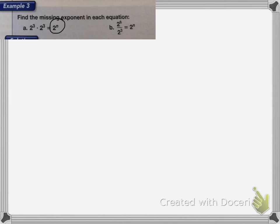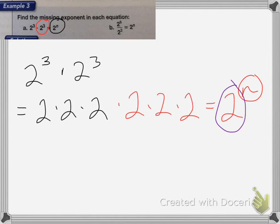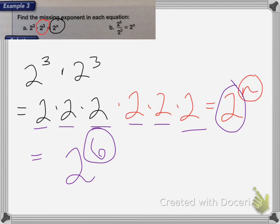This one wants me to find the missing exponent in each equation. For A, we have 2 to the 3rd power times 2 to the 3rd power. 2 to the 3rd power is 2 times 2 times 2, and I'm multiplying that by another 2 times 2 times 2. The exponent tells me how many times I multiply 2 by itself — counting them: 1, 2, 3, 4, 5, 6. So the answer is 2 to the 6th power.